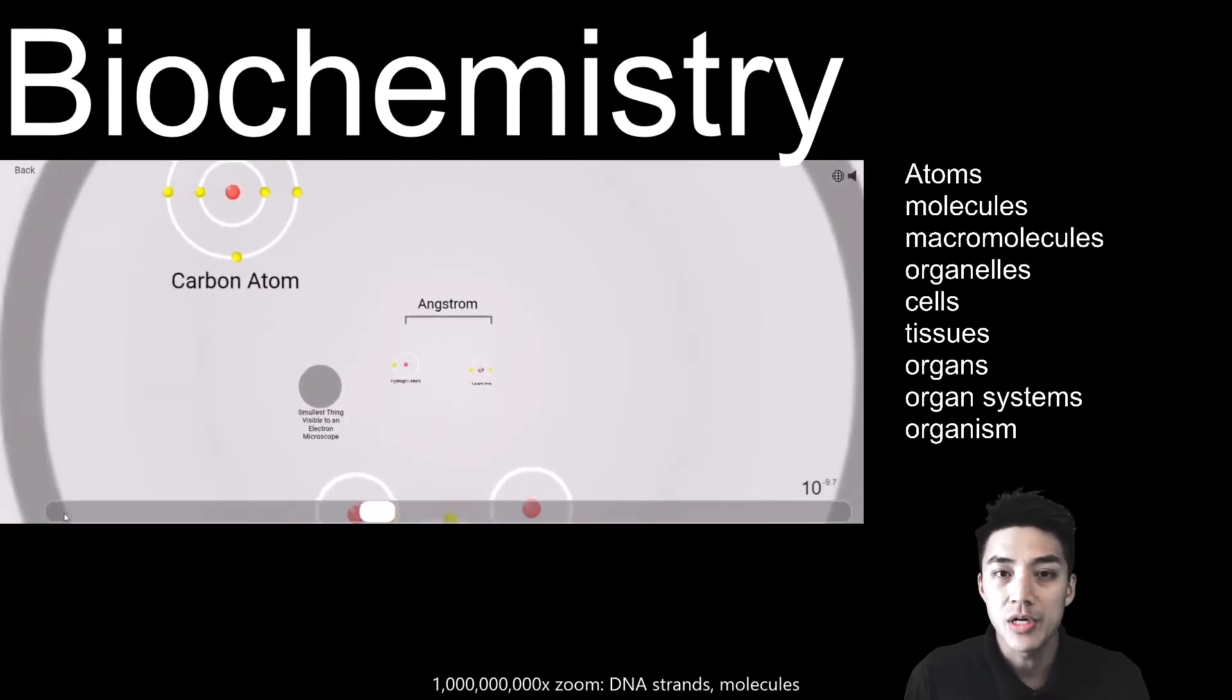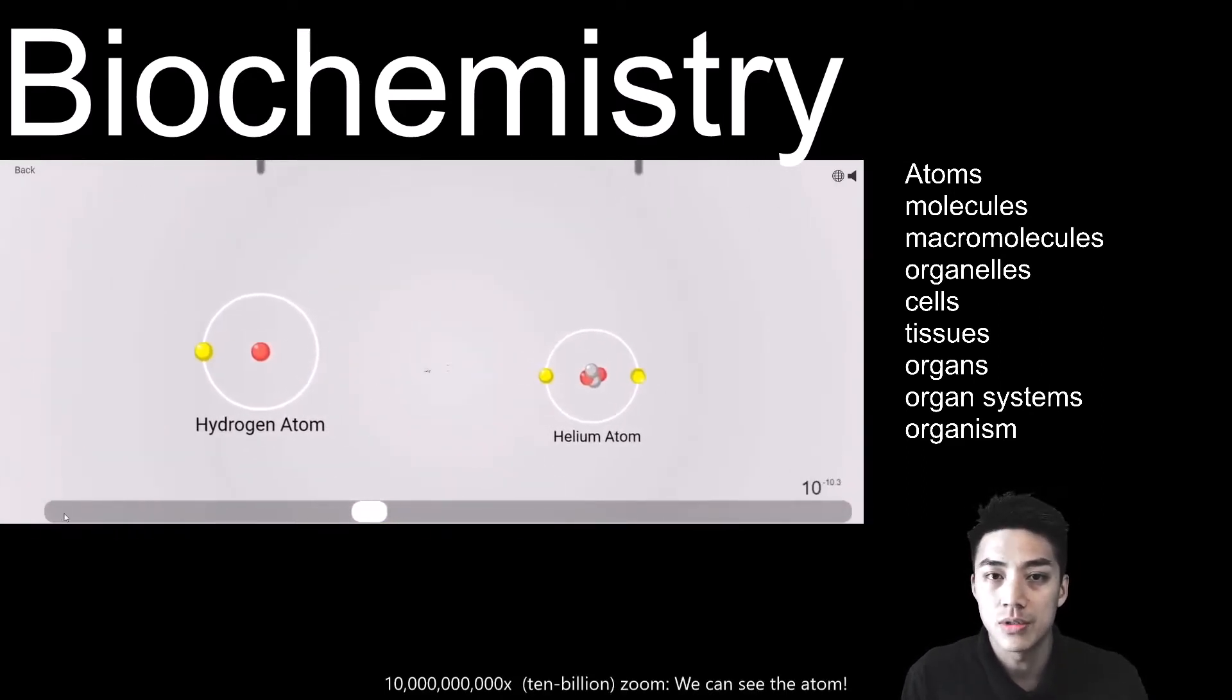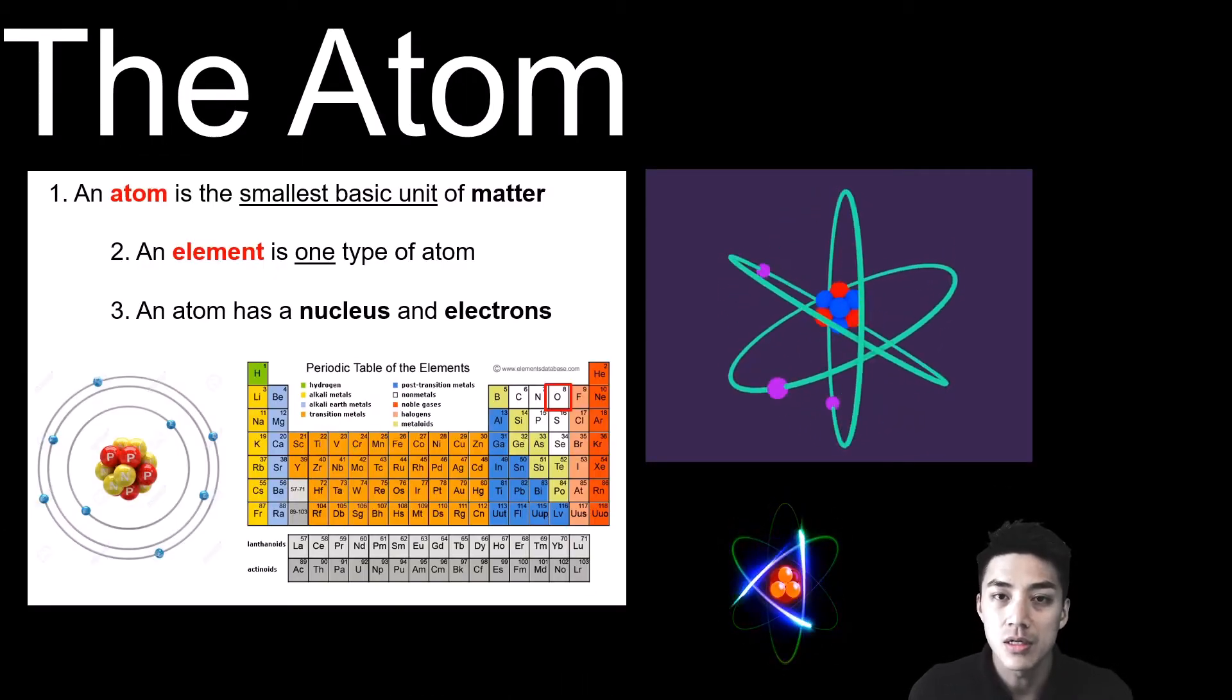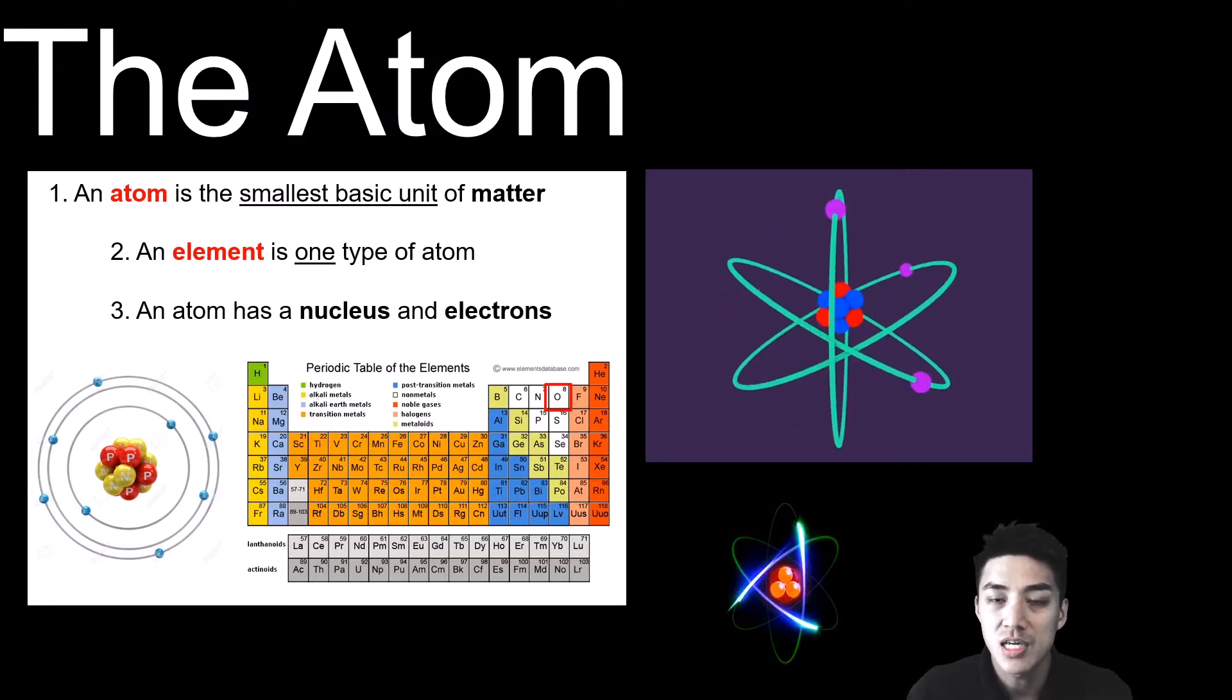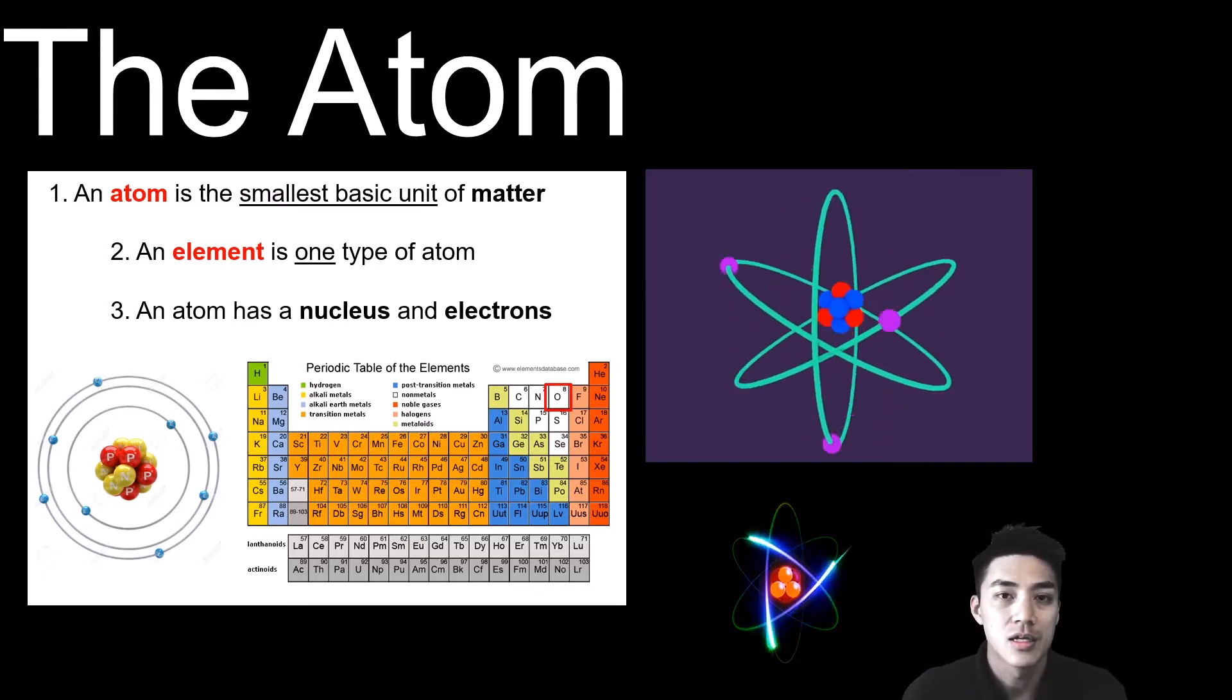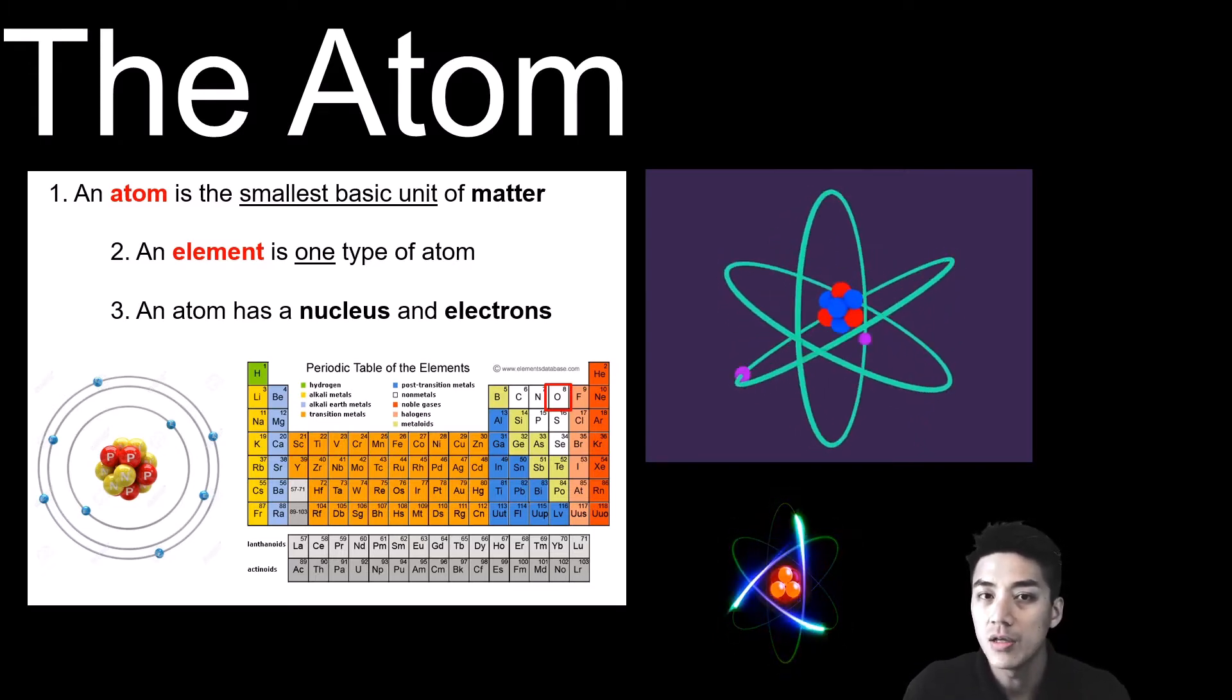In today's topic, we'll look at biochemistry and the different types of molecules that help a cell function and survive. The atom is the smallest basic unit of all matter in the universe. It's comprised of a nucleus which contains protons and neutrons. The number of protons determines what kind of element it is.